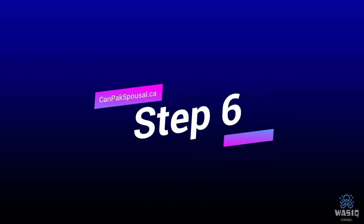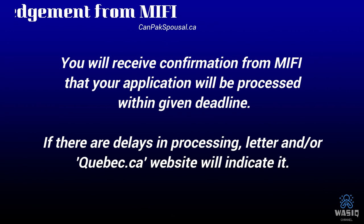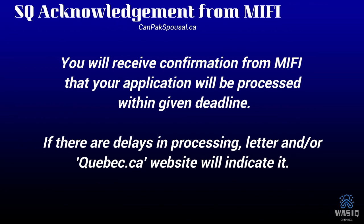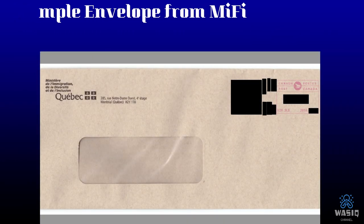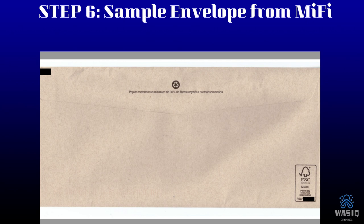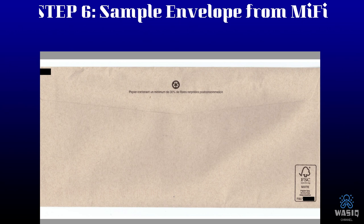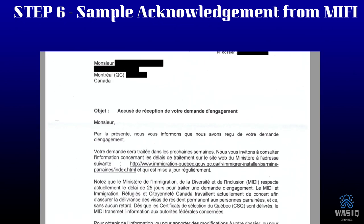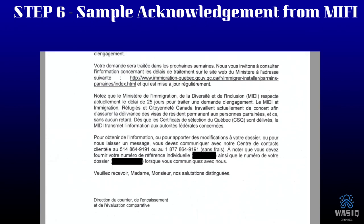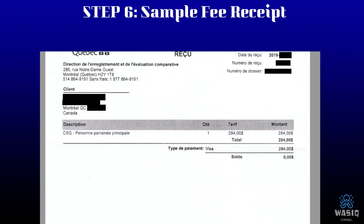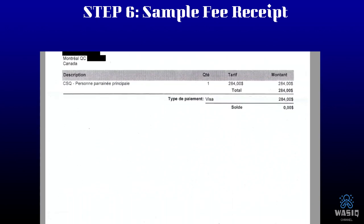Step six: you will receive confirmation from MIFI that your application will be processed within a given deadline. If there are any delays in processing, the website will indicate it. Any correspondence you receive from MIFI will look like the sample shown — be on the lookout for anything like this in your mailbox. The acknowledgement letter will tell you how much time they will take to process your application, and includes contact numbers if you have queries. This is also the fee receipt you will receive.